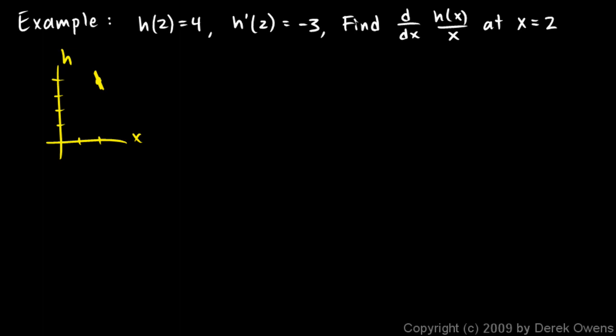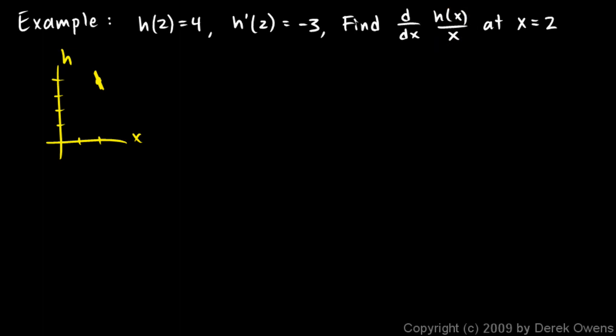Then I'm told: find the derivative of h of x over x at x equals 2. Now h of x over x is a quotient — one function over another. So I'll use the quotient rule.